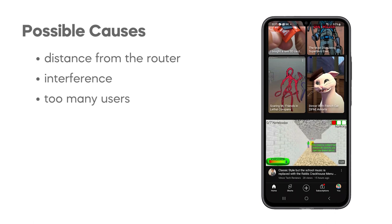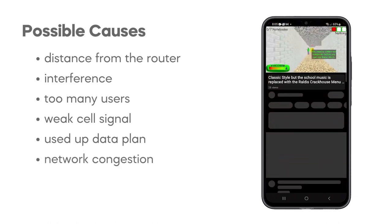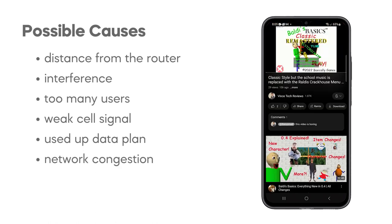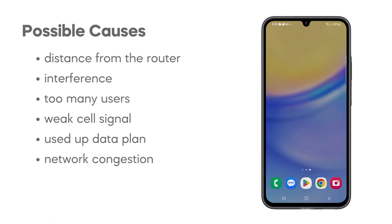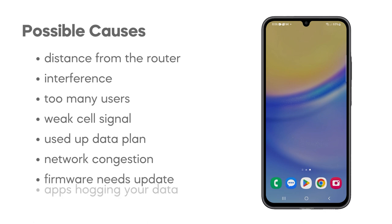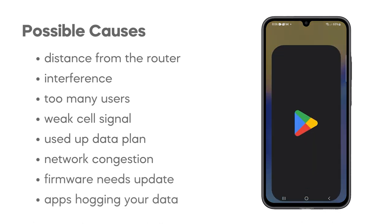For mobile data, a weak cell signal in your location, reaching your data plan's limit, or temporary congestion on your carrier's network can lead to slower speeds. Additionally, your phone's software might need an update, or background apps could be secretly using up your data.